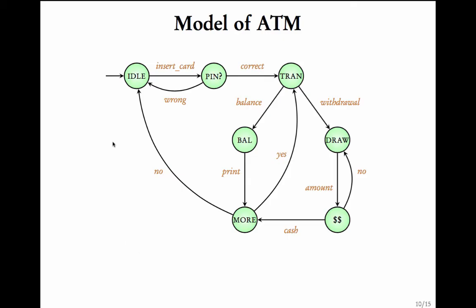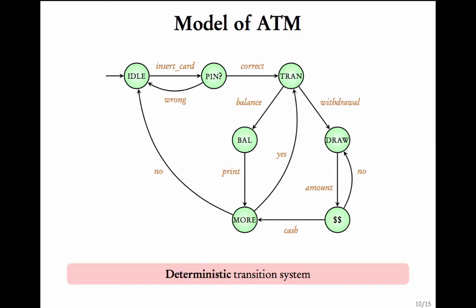Recall the transition system that modeled an ATM. Is this deterministic or non-deterministic? There is only one initial state. From the 'pin' state on action 'correct' there is one transition, on 'wrong' there is one transition. From the 'tran' state, on 'balance' there is one transition and on 'withdrawal' there is one transition. Every state has a unique transition on each action, so this transition system is deterministic.